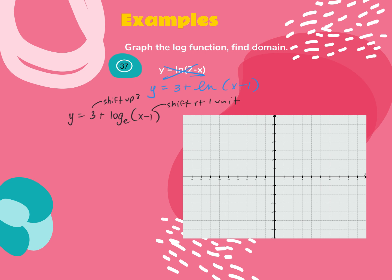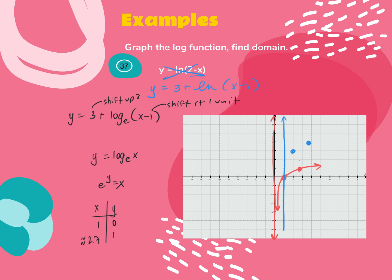The basic function is y equals ln(x), or e to the y equals x. We know that when y is 0, x is 1, and when y is 1, x is approximately 2.7. The asymptote is at the y-axis. Now I apply both shifts — each point goes up 3 and 1 to the right. So (1, 0) moves to (2, 3) and (2.7, 1) moves to (3.7, 4). The shift up of 3 doesn't move the asymptote, but the shift right of 1 does — so the asymptote is now at x equals 1.